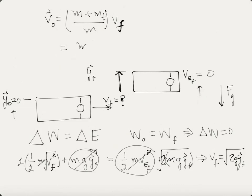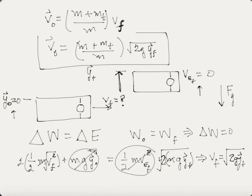Substituting v_f = √(2g·Δy) into our momentum equation gives: v₀ = (m_ball + m_tube) / m_ball × √(2g·Δy). The only measurements we need are the mass of the ball, the mass of the tube, and the height. This is the theory we'll refer back to. In the next video, we'll go into the experiment.